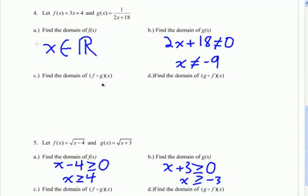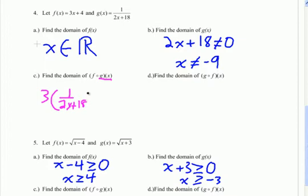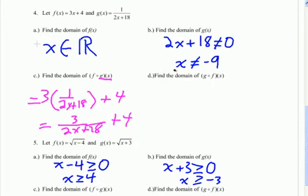On number 4, we're finding the domain of f of g of x. Start with the domain of g of x — it's a rational function, so the denominator can't equal zero. Setting it equal to zero: subtract 18, divide by 2, x can't equal negative 9. Now plug g of x into f of x and get 3 times 1 over (2x plus 18) plus 4, which simplifies to 3 over (2x plus 18) plus 4. We still have a rational function, so the denominator can't equal zero, giving the same restriction: x can't equal negative 9.